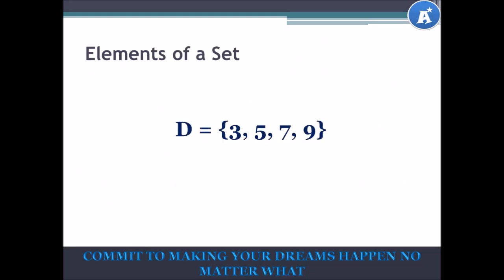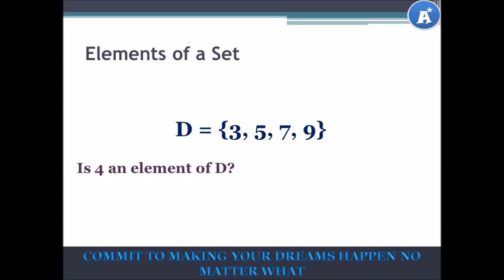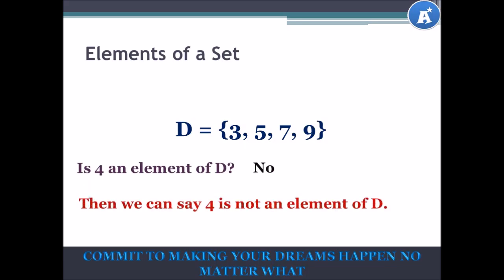Let's look at the set D. D is equal to the set of 3, 5, 7, and 9. Is 3 an element of D? Yes, it is. So therefore, we can see 3 is an element of D — written as 3 ∈ D. Is 4 an element of D? No, it isn't. Therefore, 4 is not an element of D — written as 4 ∉ D.